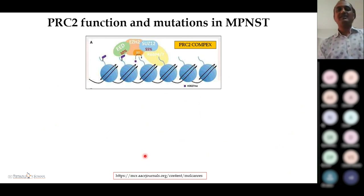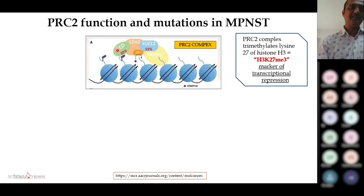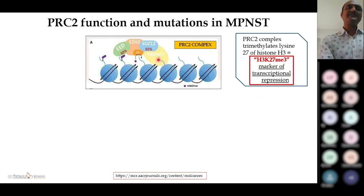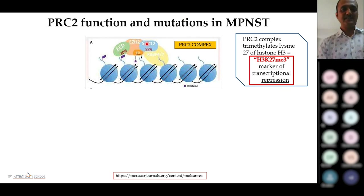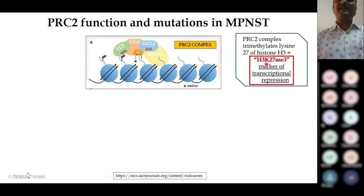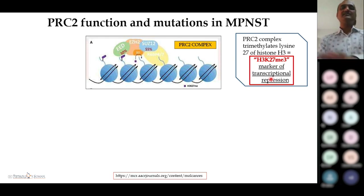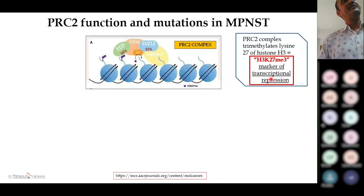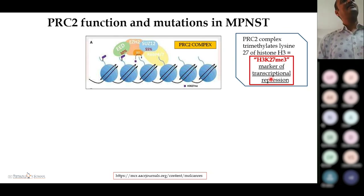PRC2 is a chromatin-modifying complex with four components: EED, EZH2, SUZ12, and one more. PRC2 manufactures H3K27Me3, a marker of transcriptional repression, by trimethylating lysine-27 at the H3 histone position. While H3K27Me3 is present, cell proliferation is repressed. Once H3K27Me3 is lost, this checkpoint is removed and cells proliferate exponentially, transforming into tumor.